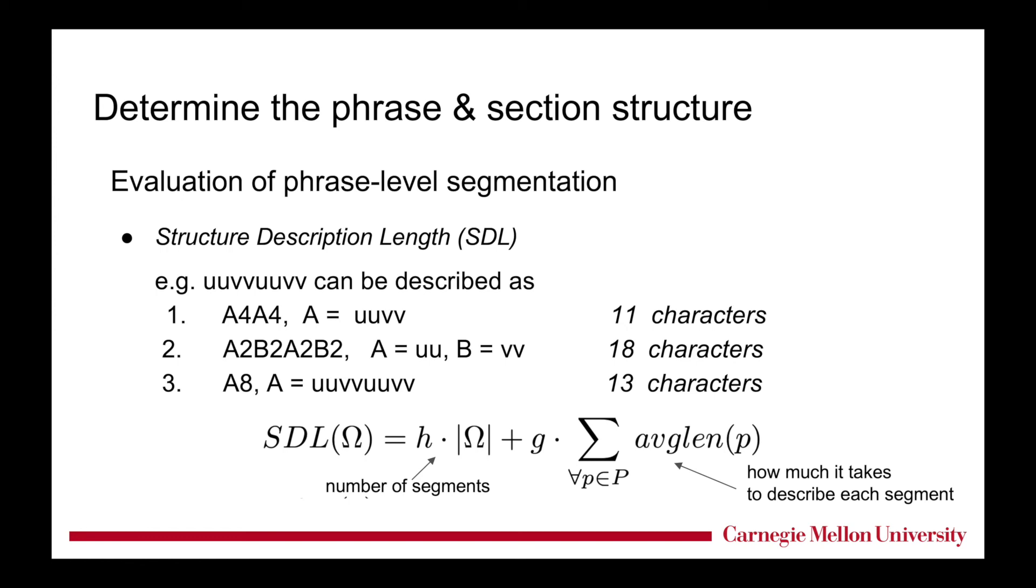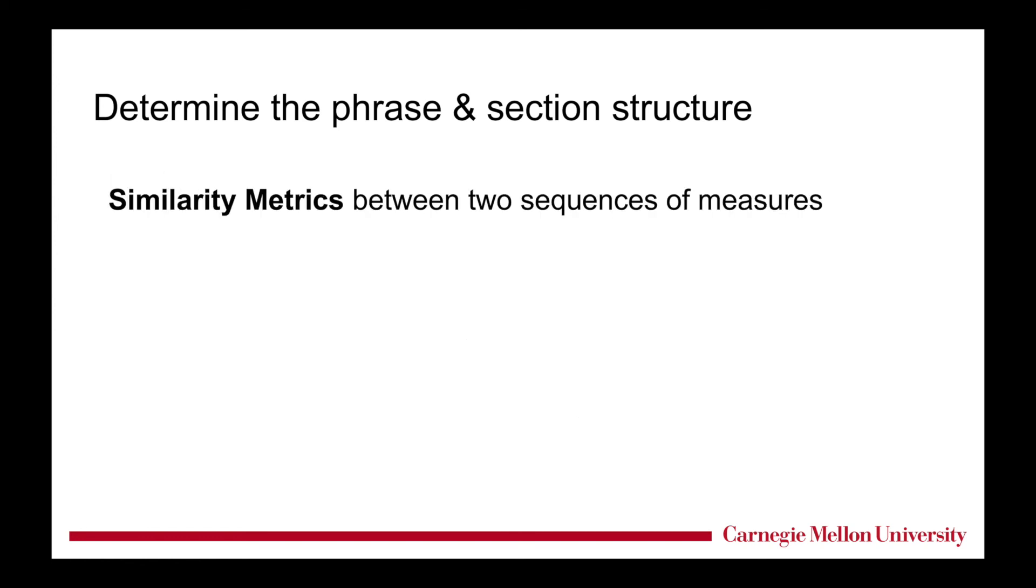Thus, we need a way to determine whether two segments are actually repetitions. This is how we calculate similarity between two sequences of measures. We form a weighted sum of these three different attributes. They are melody contour similarity using dynamic time warping algorithm, chord similarity matrix, and rhythm onset similarity comparison. And if the weighted sum exceeds the threshold, we then consider the two segments as a repetition.